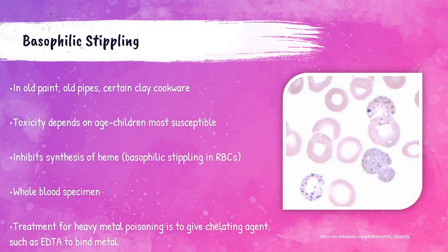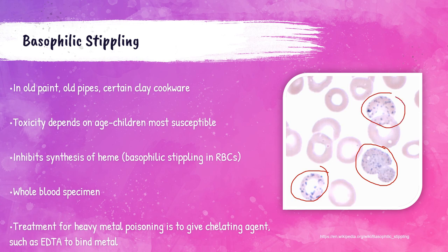Levels of lead can be found in old paint, pipes, and certain clay cookware. Lead disrupts the synthesis of heme — a part of hemoglobin responsible for transporting oxygen in red blood cells — with children being the most susceptible. Samples testing for lead levels must be whole blood specimens. Patients with lead poisoning may have basophilic stippling present in their peripheral blood smear. Treatment is to give a chelating agent to bind the metal.